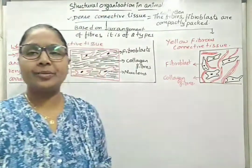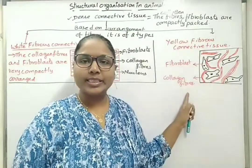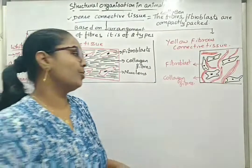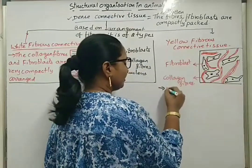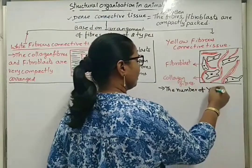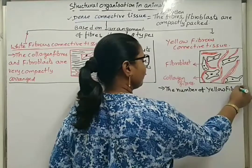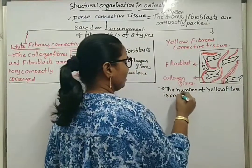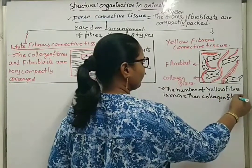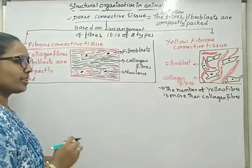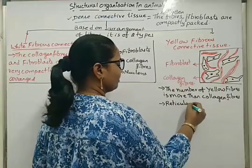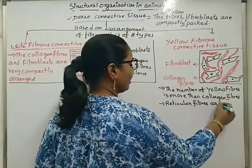In case of yellow fibrous connective tissue, the number or quantity of collagen fibers is less and the number of yellow fibers will be more. So, the number of yellow fibers is more than collagen fibers. Here also, the reticular fibers which are arranged in network-like patterns are absent.